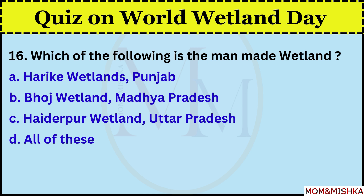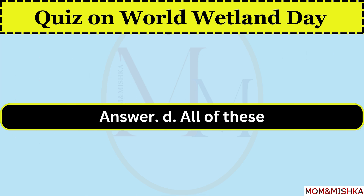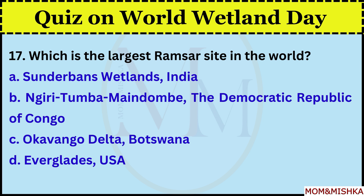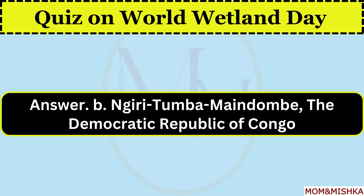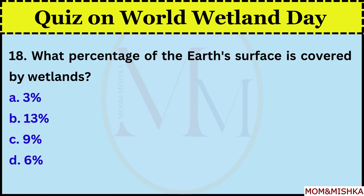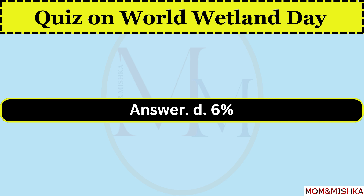Which of the following is a man-made wetland? All of these, option D. Which is the largest Ramsar site in the world? Ngiri-Tumba-Maindombe, Democratic Republic of Congo, option B. What percentage of the earth's surface is covered by wetlands? 6%, option D.